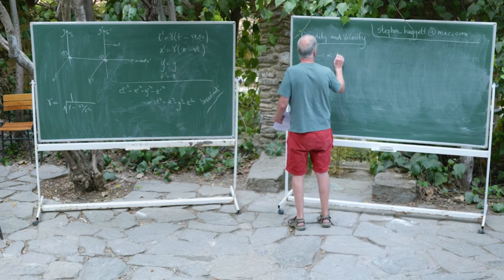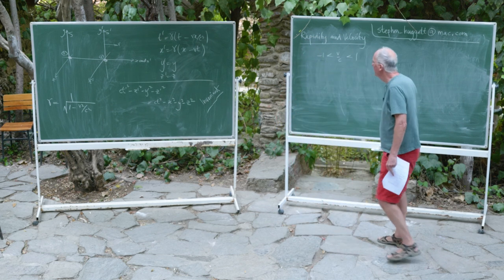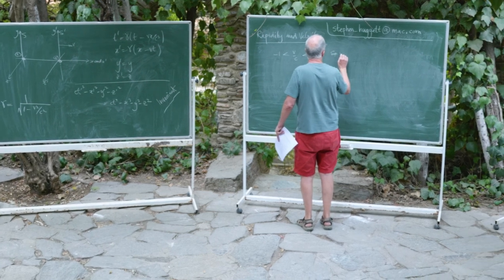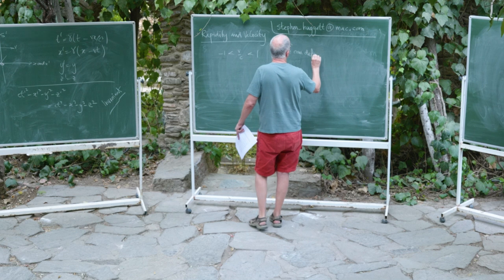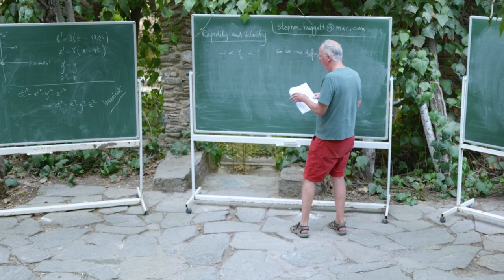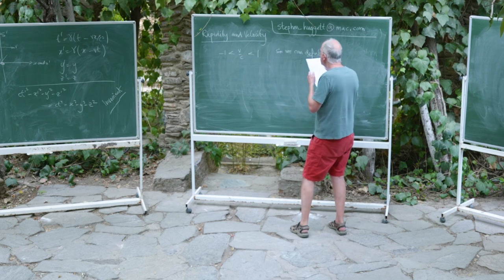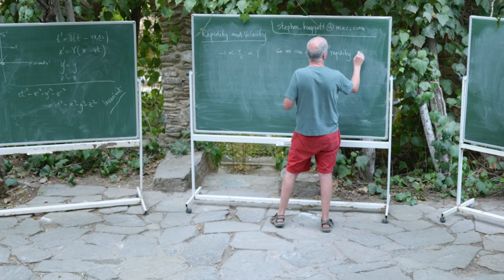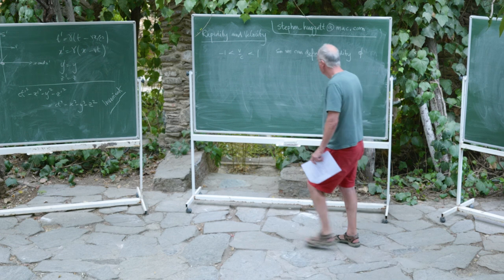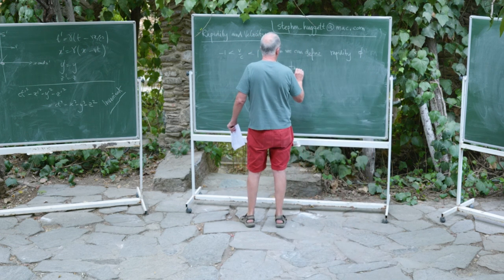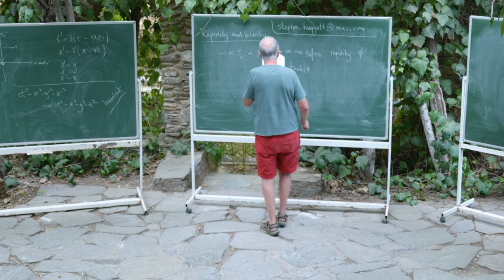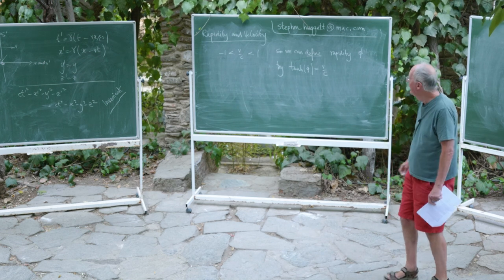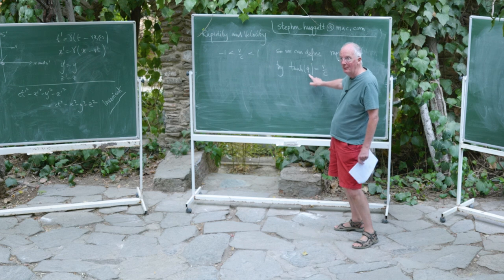Note that v/c satisfies those inequalities, and we define the rapidity, which I'm going to denote by the Greek letter φ, by: tanh(φ) = v/c, or in other words φ is the inverse hyperbolic tangent of v/c.